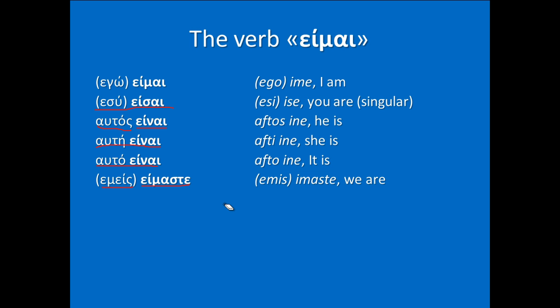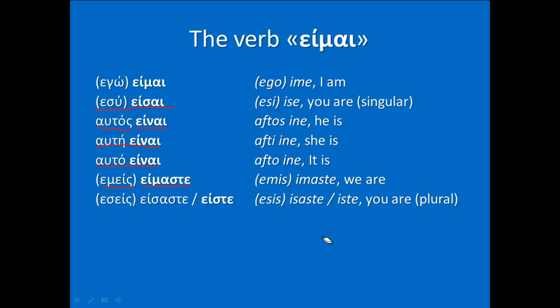ESEIS EISASTE or EISTE means 'you are' — either for many people or for one person to whom we want to give respect. This is formal. In Greek, as in some other languages, when speaking to a professor, teacher, employer, or unknown person we want to show respect to, we use the plural form. This does not happen in English.